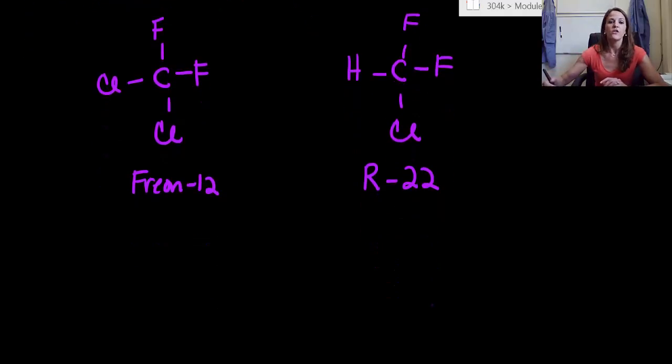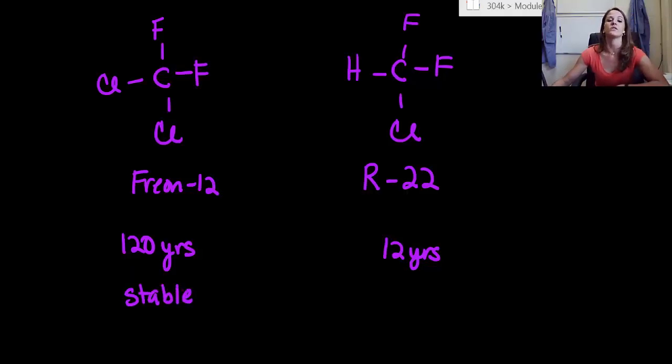Let's compare the two. First, Freon-12 can live for 120 years in our environment - that's a long time - whereas R-22 only exists for about 12 years, which is much better in terms of stratospheric ozone depletion. Freon-12 is very stable, so it's not going to decompose anywhere, it'll just flow all the way up to the stratosphere. However, HCFCs like R-22 are unstable and actually decompose in our troposphere, which is great because that means they never even make it to our stratosphere.